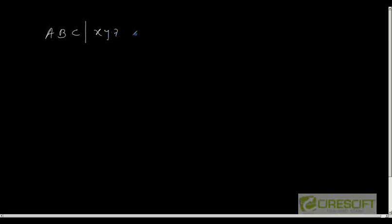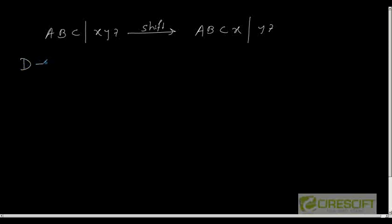Let me elaborate the shift and reduce actions further. Suppose at any point of time my parser state represents the sequence as A B C | X Y Z — where A, B, C are on the left of the marker and X Y Z are on the right. If I apply shift, my parser state becomes A B C X | Y Z — X moves to the left of the marker and the marker moves one place to the right.